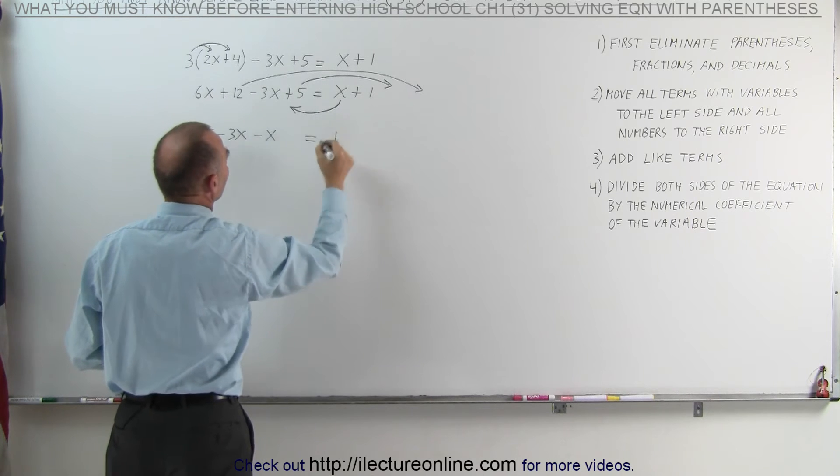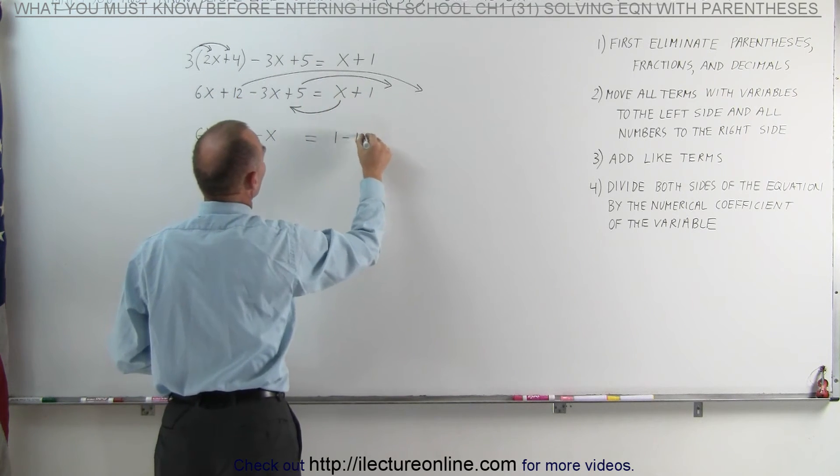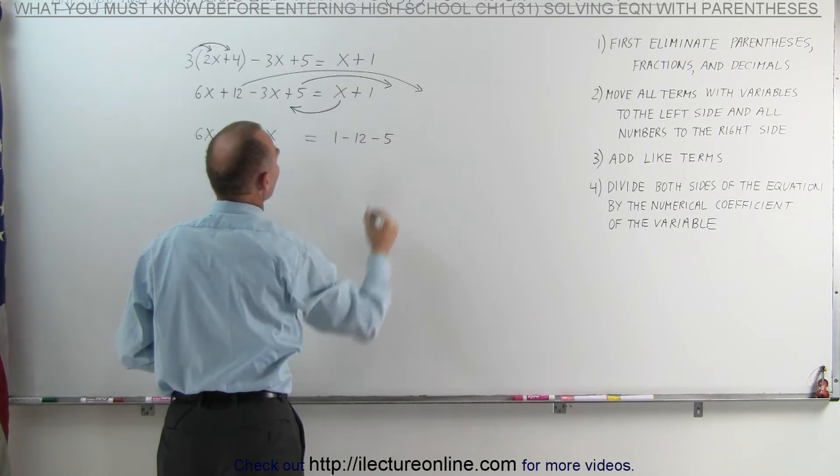On the right side, we already had the number 1. When we move the 12 to the other side, it becomes a minus 12. And when we move the positive 5 to the other side, we get a minus 5.